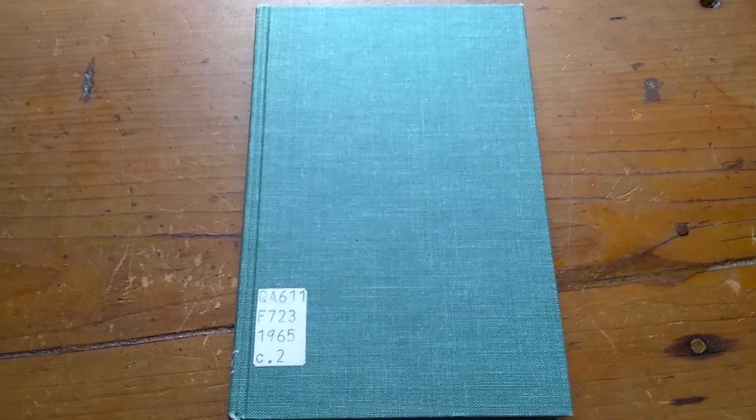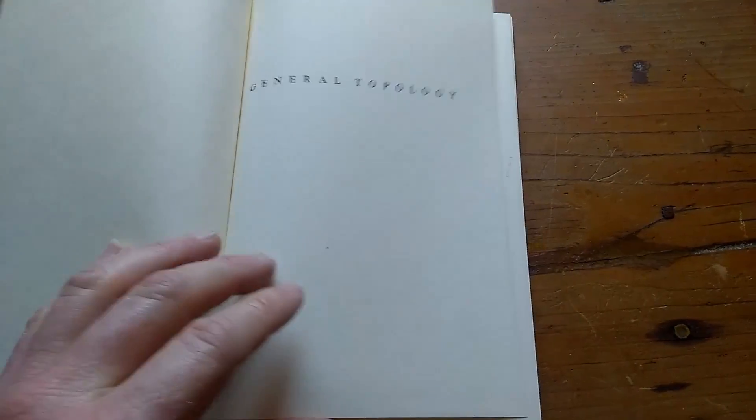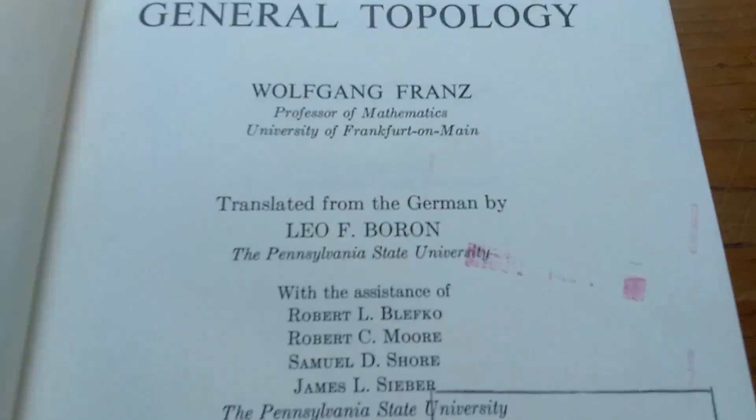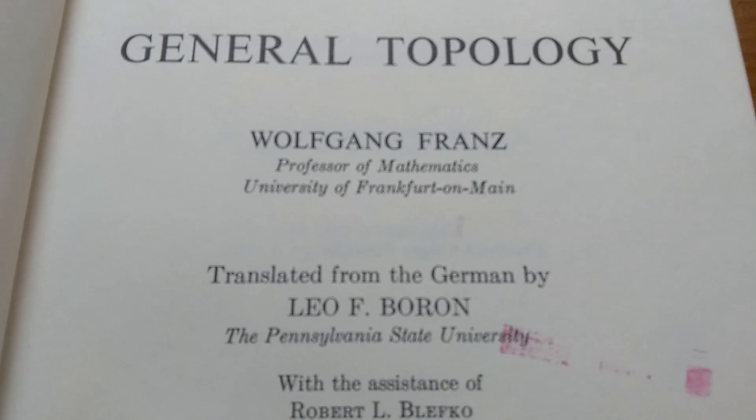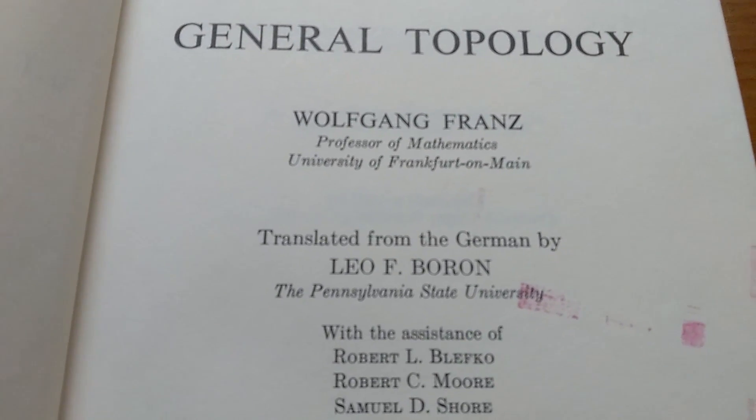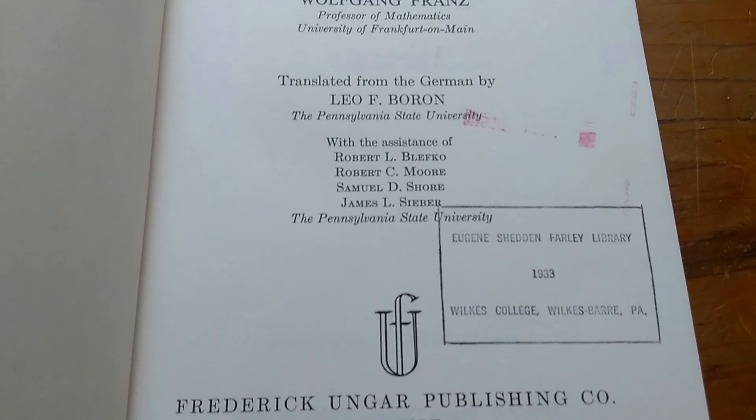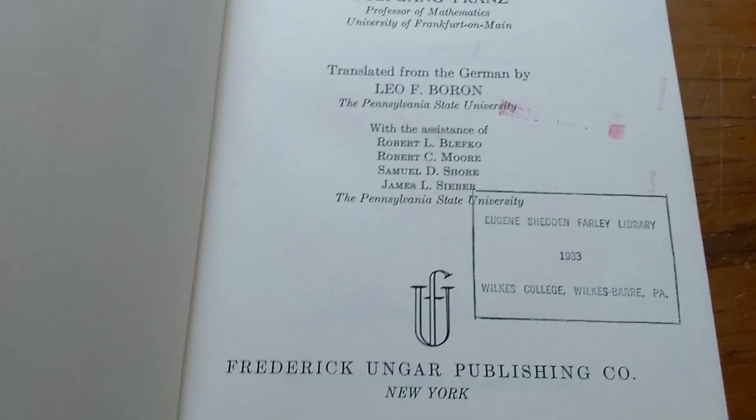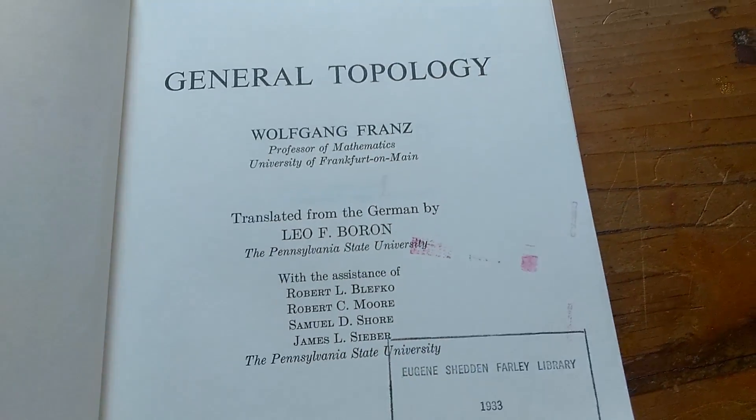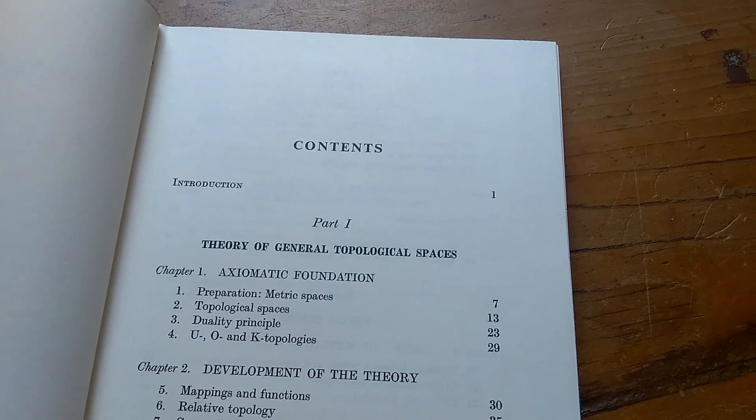So this guy was a hardcore mathematician. He was a really good mathematician, and this is a really good book actually. So you see here, Wolfgang Franz, professor of mathematics, University of Frankfurt. Yeah, so it originally was written in German, I believe, and this is a translation. So let's take a look inside it.